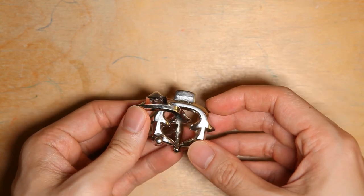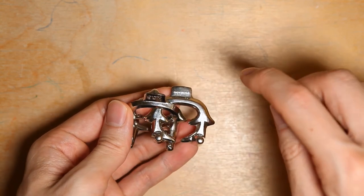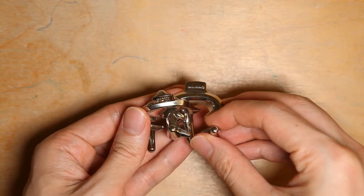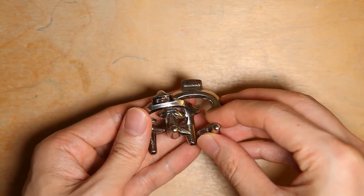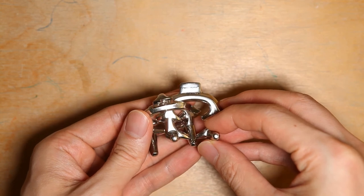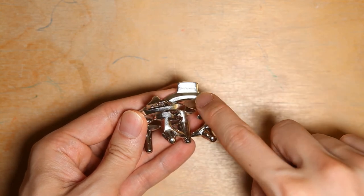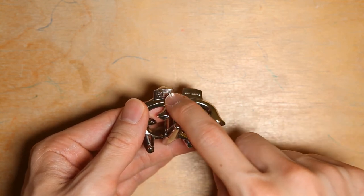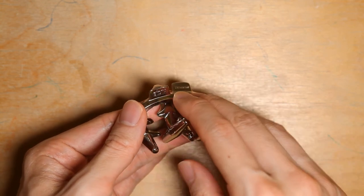So just to make everything clear, just as most of the Hanayama Cast puzzles, each of the pieces are marked. One is marked with the Hanayama logo and the other one is NOB, which I think is the creator of this puzzle.